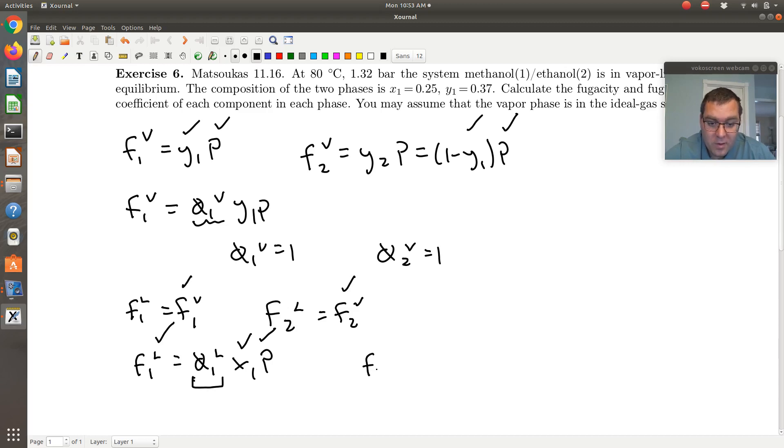Likewise, if I were to expand out the fugacity of component 2 in the liquid, it would be phi2L X2 times P. I know P, I know X2 is just 1 minus X1, I know F2L, I just calculated it, so that would leave me with one unknown, phi2L. So I can go ahead and solve for everything that we're asked for. Cool.